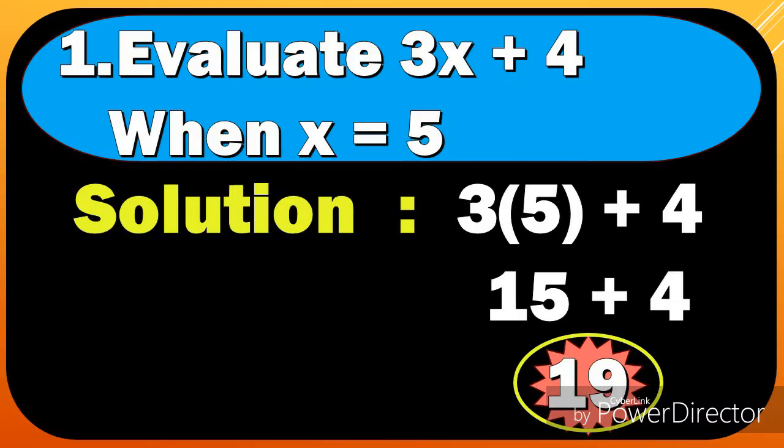Number 1. Evaluate 3x plus 4 when x equals 5. In this example, we're going to substitute the value of x which is 5. So we have 3 times 5 plus 4. 3 times 5 equals 15 plus 4 equals 19.